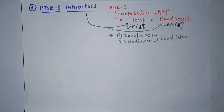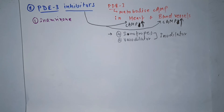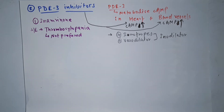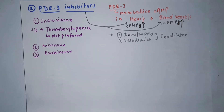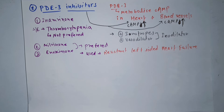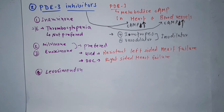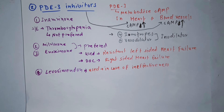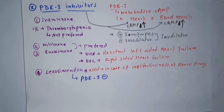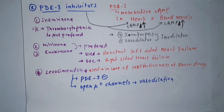Because of their dual action, they are known as inodilatators. The first drug is inamrinone, which has a side effect of thrombocytopenia and is therefore not preferred in CHF. Other drugs are milrinone and enoximone, which are preferred and used in resistant left-sided heart failure and as drug of choice for right-sided heart failure. Levosimendan is used in case of ineffectiveness of the above drugs. It not only blocks phosphodiesterase 3 but also opens potassium channels and causes vasodilation.